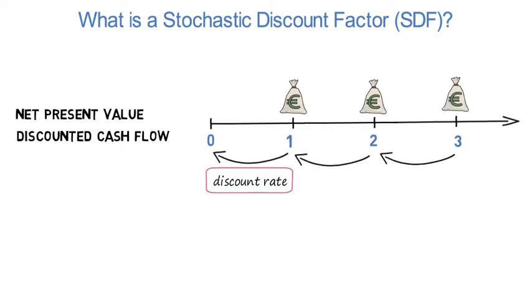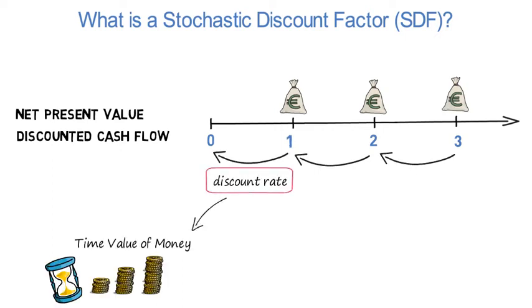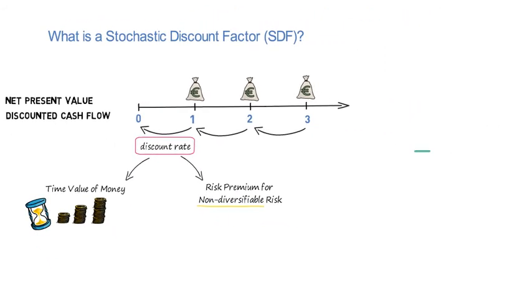The discount rate is made of the time value of money and a risk premium which compensates for holding non-diversifiable risk.